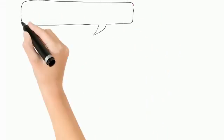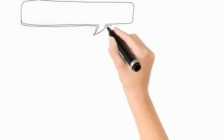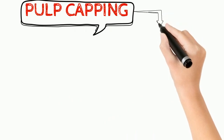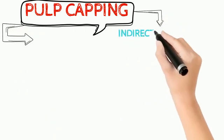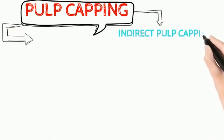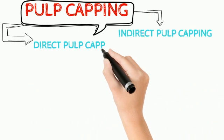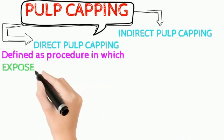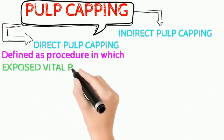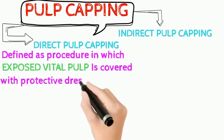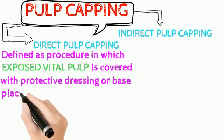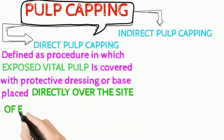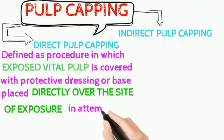Let's brief on pulp capping. Pulp capping is of two types: direct pulp capping and indirect pulp capping. Direct pulp capping is defined as a procedure in which the exposed vital pulp is covered with a protective dressing or base placed directly over the site of exposure in an attempt to preserve the pulp vitality.